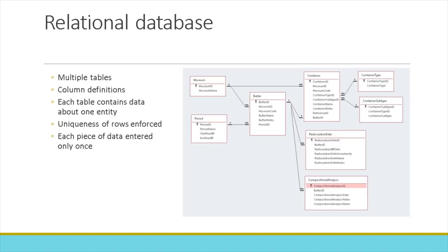In a relational database, you have multiple tables. Each table is composed of column definitions — things like the name of the column plus the data type, which may be a date, a number, or a string of a certain length. Each table contains data about only one entity. The uniqueness of rows is enforced, and each piece of data is entered only once.